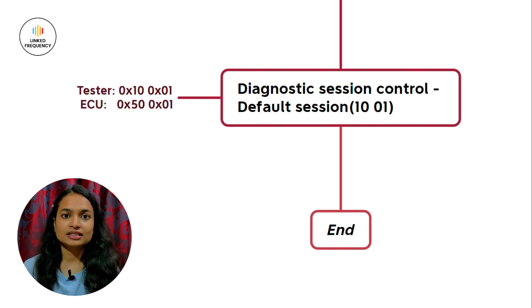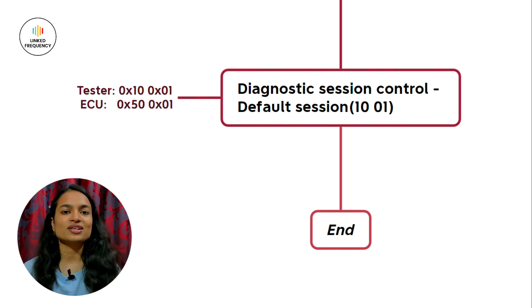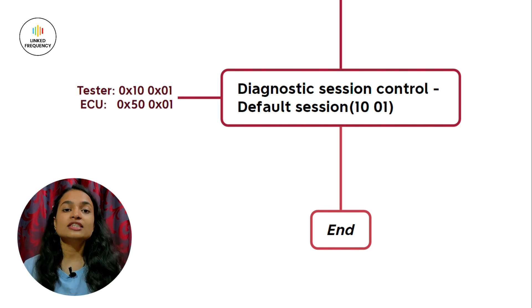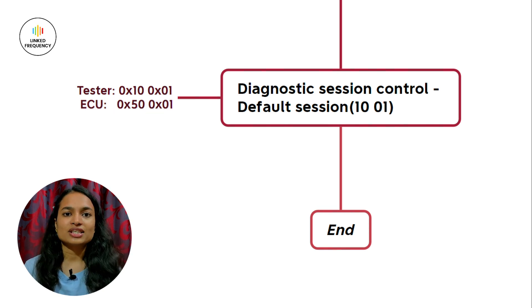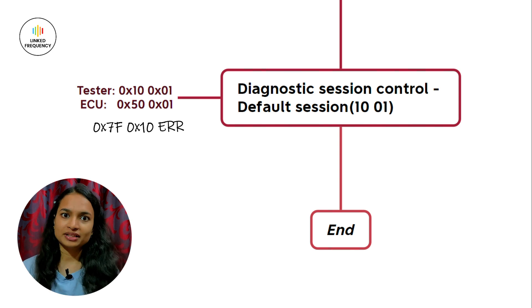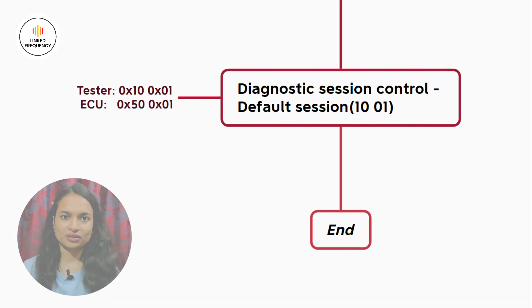Here, 10 represents the service identifier for Diagnostic Session Control, and 01 represents the sub-function for the Default Session. The responses received from the ECU include a positive response 50.01, indicating positive acknowledgement, and a negative response — 7F 10 followed by the error code. For reference, let us consider the negative response as 7F 10 22, where 22 represents 'Conditions Not Correct.'